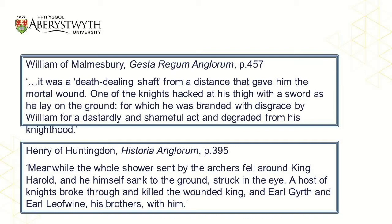William of Malmesbury, in his Gesta Regum Anglorum, writes: 'it was a death-dealing shaft from a distance that gave Harold the mortal wound. One of the knights hacked at his thigh with a sword as he lay on the ground, for which he was branded with disgrace by William for a dastardly and shameful act and degraded from the knighthood.' We see here he mentions two aspects to Harold's death: first, he is struck with the arrow, and secondly, he is attacked by a group of Norman knights. Henry of Huntingdon includes a similar idea within his Historia Anglorum. He notes that meanwhile the whole shower sent by the archers fell around King Harold and he himself sank to the ground, struck in the eye. A whole host of knights broke through and killed the wounded king, and Earl Gyrth and Earl Leofwine, his brothers, with him.